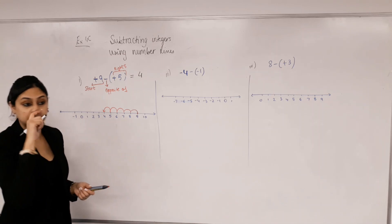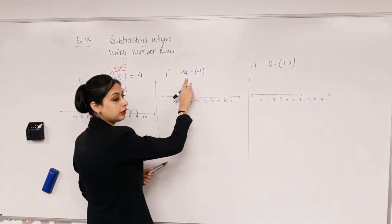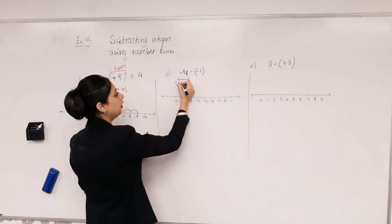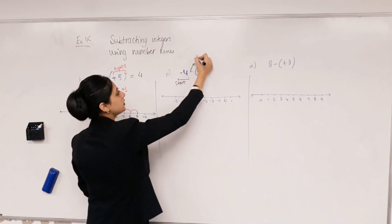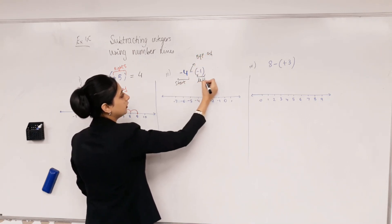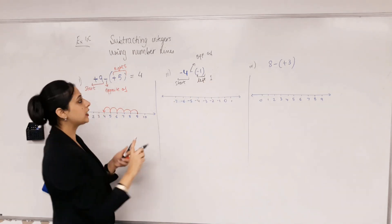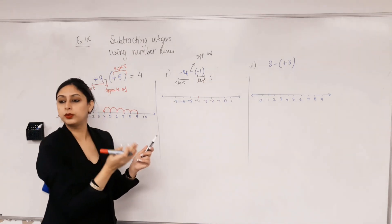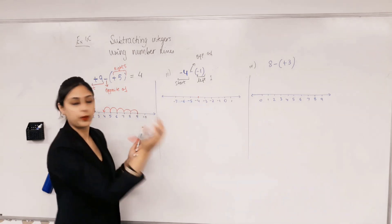Yes, that's it. Starting from negative four, opposite of what negative one means. Left one, so we're starting at negative four. What's the opposite of moving one left? Moving one right.